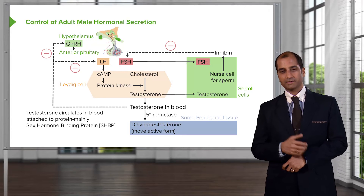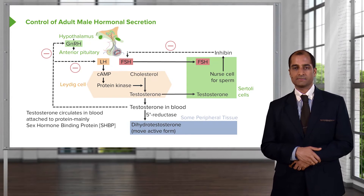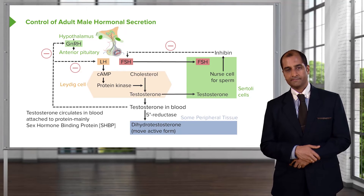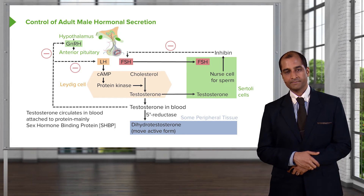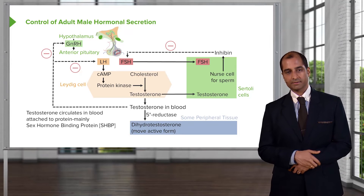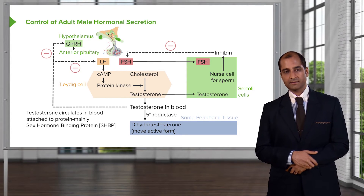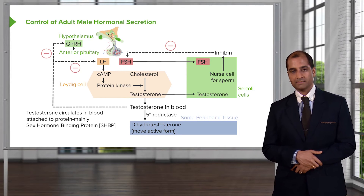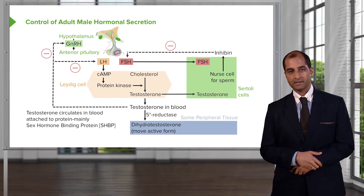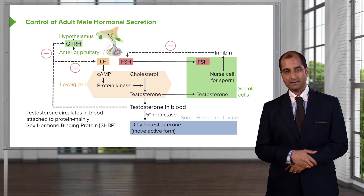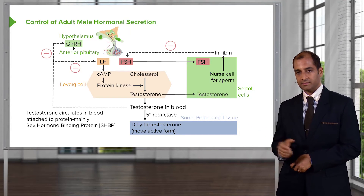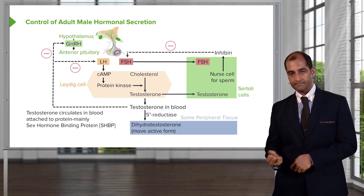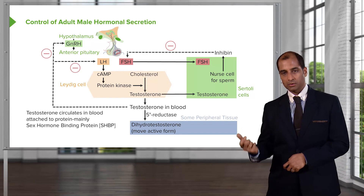The Sertoli cell contains a binding protein specifically called androgen binding protein. It's important to distinguish the binding globulins the liver produces — such as sex hormone binding globulin — from the binding proteins found within individual cells, like androgen binding protein. The androgen binding protein anchors testosterone in the Sertoli cell so that sperm can be properly matured.